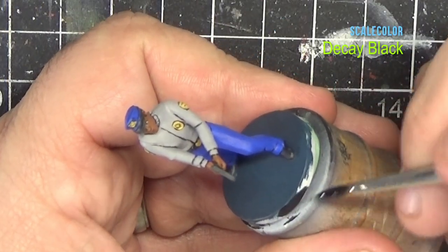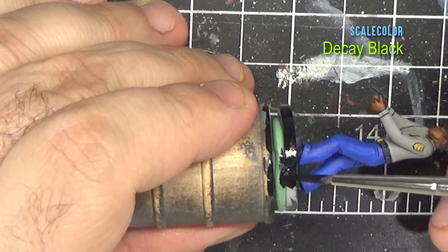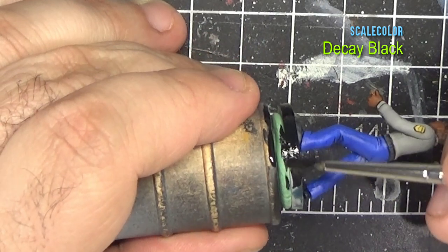As a final step to really give the miniature a finished look, we apply pure black around the rim of the base.